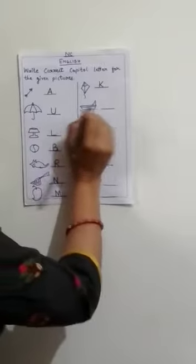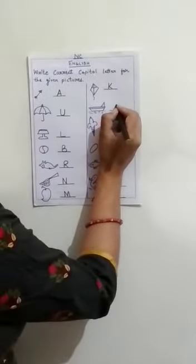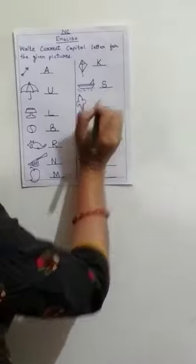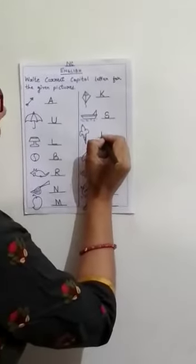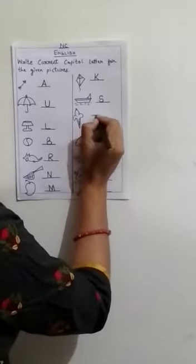This is ship. S for ship, capital S. This is ice cream. I for ice cream, capital I.